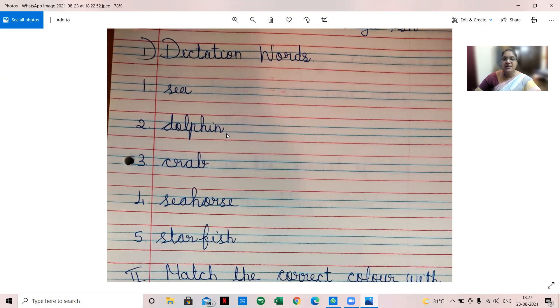S-E-A sea. D-O-L-P-H-I-N dolphin. C-R-A-B crab. S-E-A-H-O-R-S-E seahorse. S-T-A-R-F-I-S-H starfish. So these are the five dictation words.